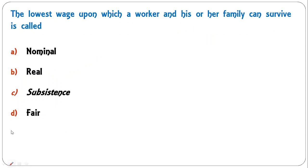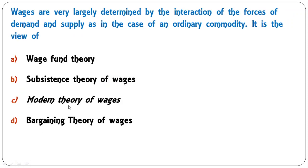The lowest wage upon which a worker and his or her family can survive is called subsistence wage — just enough to survive. C is the correct answer.